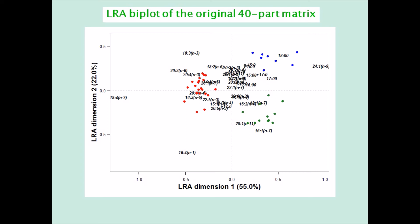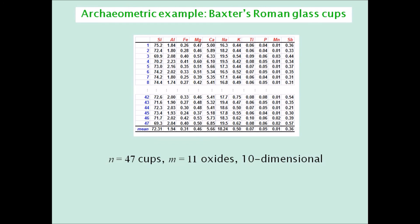To finish off, some quick slides of another application to the archimetric data on Roman glass cups. 47 cups, 11 oxides, 10-dimensional.